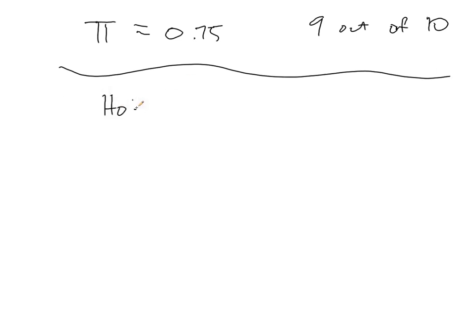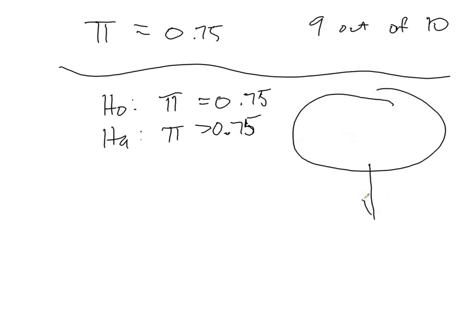So in this case, our null hypothesis is going to be that it's equal to 0.75, in which case the medication won't be approved. In the alternative hypothesis, we need it to be greater than 0.75. And we'll only be able to conclude that it's greater than 0.75 if our sample is sufficiently high enough.